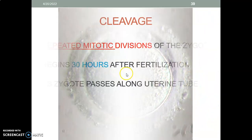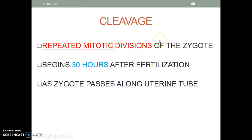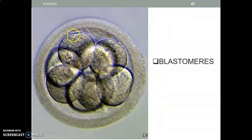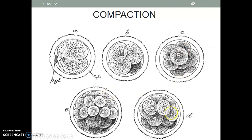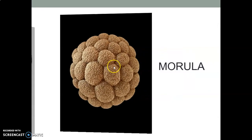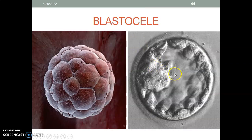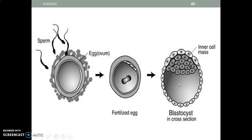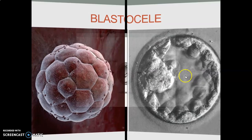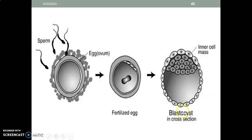Next, we discuss early development. After the pro-nuclei have fused, cleavage begins. Cleavage is just repeated mitotic divisions of the zygote — it begins 30 hours after fertilization. As the zygote is passing along the uterine tube, it undergoes mitosis and you form blastomeres. You start with 2, then 4, 8, 16, 32, and so on. This is what we call compaction — all these cells become compacted and you end up with a morula. Then it develops spaces in between which will be filled with fluid, and this is generally called a blastocele.